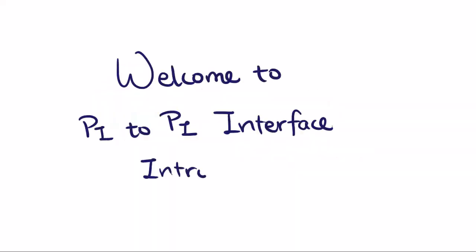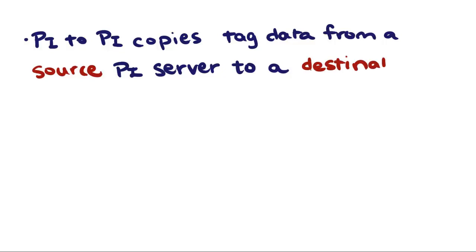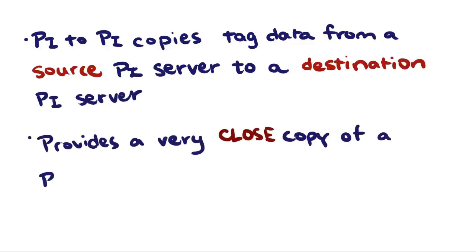Welcome to the Pi2Pi interface introduction. The Pi2Pi interface copies tag data from a source PI server to a second destination PI server, and it provides a very close copy of a PI server's tags for a variety of situations.